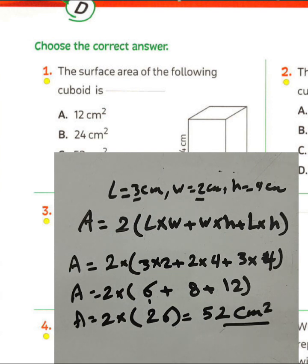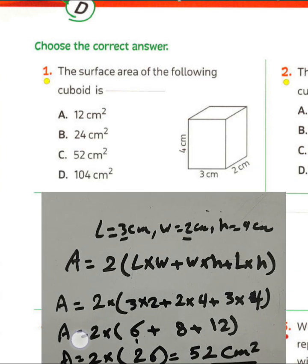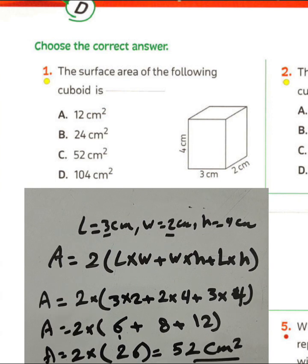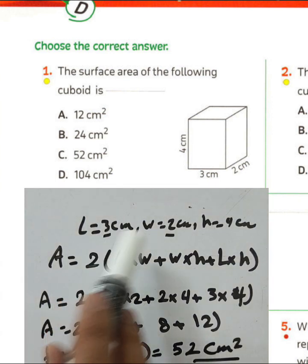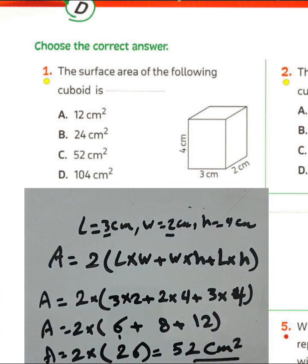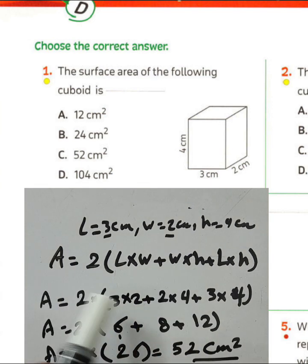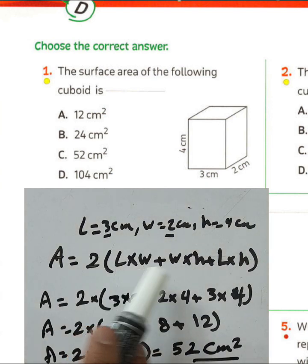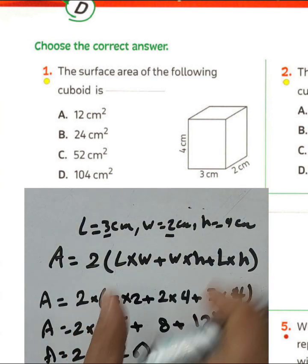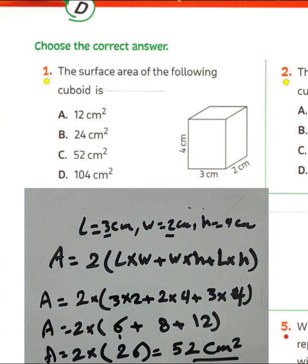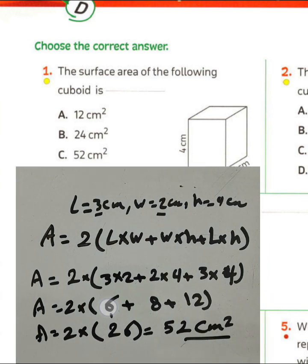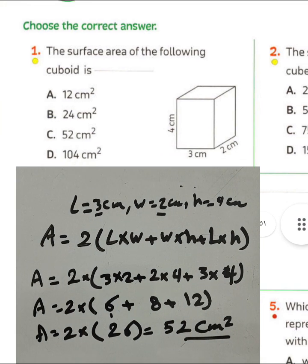First step: put the length, width, and height from the cuboid, then write the rule and substitute the values. The surface area is 52 square centimeters. Choose letter C.